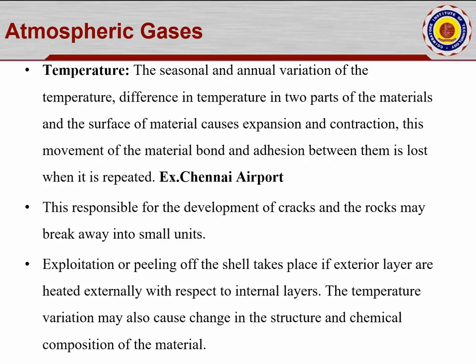Temperature is also important. Seasonal and annual variation in temperature causes expansion and contraction of materials. Just as doors open and close differently in summer and winter, repeated expansion and contraction reduces the bond and adhesion between materials. For example, at Chennai airport, the false ceiling has fallen down repeatedly — approximately 70 to 80 times — and the main reason is temperature variation.